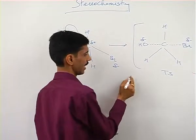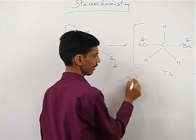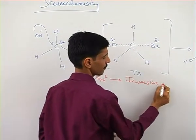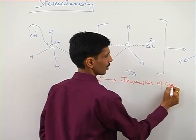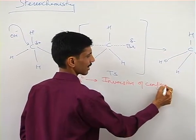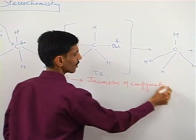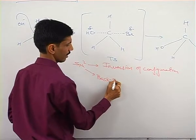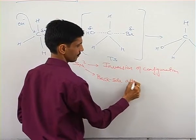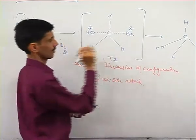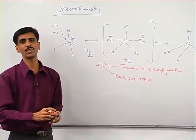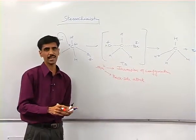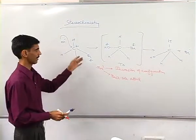And therefore, we write a tagline and that is, SN2 mechanism results in inversion of configuration. The other point you need to remember is that the attack is always a backside attack. It cannot be a front side attack. These are the two important points that you need to remember with respect to the SN2 mechanism.